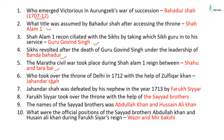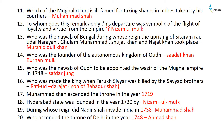Jahadar Shah was defeated by his nephew Farrukhsiyar in 1713. Farrukhsiyar took over the throne with the help of the Syed brothers. The names of the Syed brothers were Abdullah Khan and Hussain Ali Khan. Their official positions during Farrukhsiyar's reign were Wazir and Mir Bakshi respectively — Abdullah Khan was the Wazir and Hussain Ali Khan was the Mir Bakshi. This is an important section frequently asked in PCS state exams. The Mughal ruler ill-famed for taking shares in bribes taken by his courtiers was Muhammad Shah.